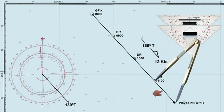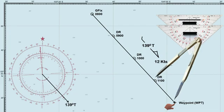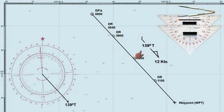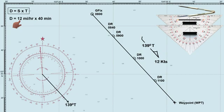Keep in mind that DR positions can be increasingly inaccurate over time because we don't account for external factors such as wind and current. Therefore, DR is less precise compared to GPS and radar fixes. So how do we find the ship's DR position at 0840 hours? First, we need to calculate the distance traveled by the ship in 40 minutes at a speed of 12 knots. We'll use the formula: distance is equal to speed times time. The ship's speed is 12 knots, or 12 miles per hour, multiplied by the steaming time of 40 minutes.